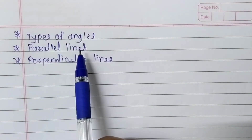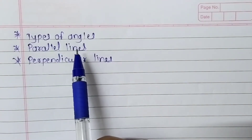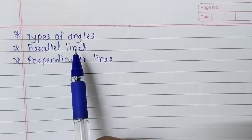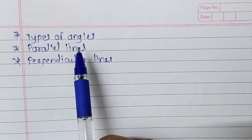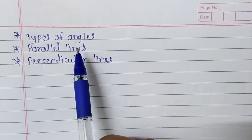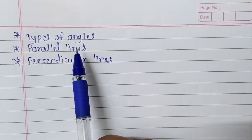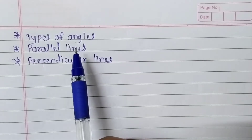Types of angles. In this lesson we are going to learn about three types of angles: right angle, acute angle, and obtuse angle, along with their definitions.